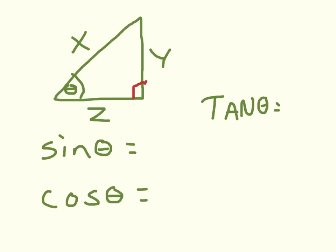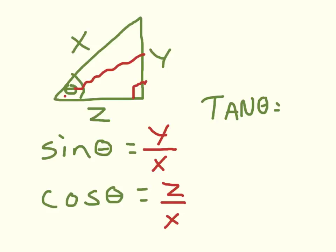We have a right triangle with sides X, Y, and Z. There's the symbol theta written in the bottom left corner — we reference angles by Greek letters like alpha, beta, gamma, delta, and theta. Sine of theta: sine is opposite over hypotenuse, so opposite from me is Y over hypotenuse X. Cosine of theta: adjacent is Z over X. Tangent: opposite over adjacent, which is Y over Z. You just have to get used to writing out those three relationships.